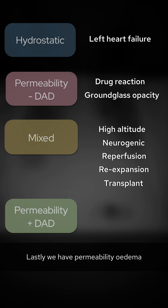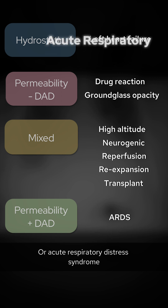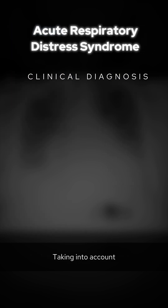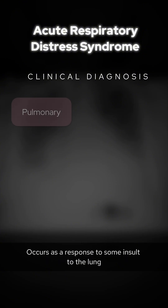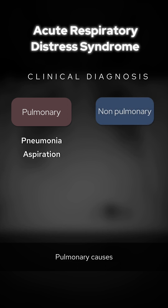Lastly, we have permeability edema with diffuse alveolar damage. This includes ARDS, or acute respiratory distress syndrome, which is mainly a clinical diagnosis taking into account the pulmonary shunt fraction. This usually occurs as a response to insults to the lung, such as severe pneumonia, aspiration, or non-pulmonary causes such as pancreatitis or trauma.